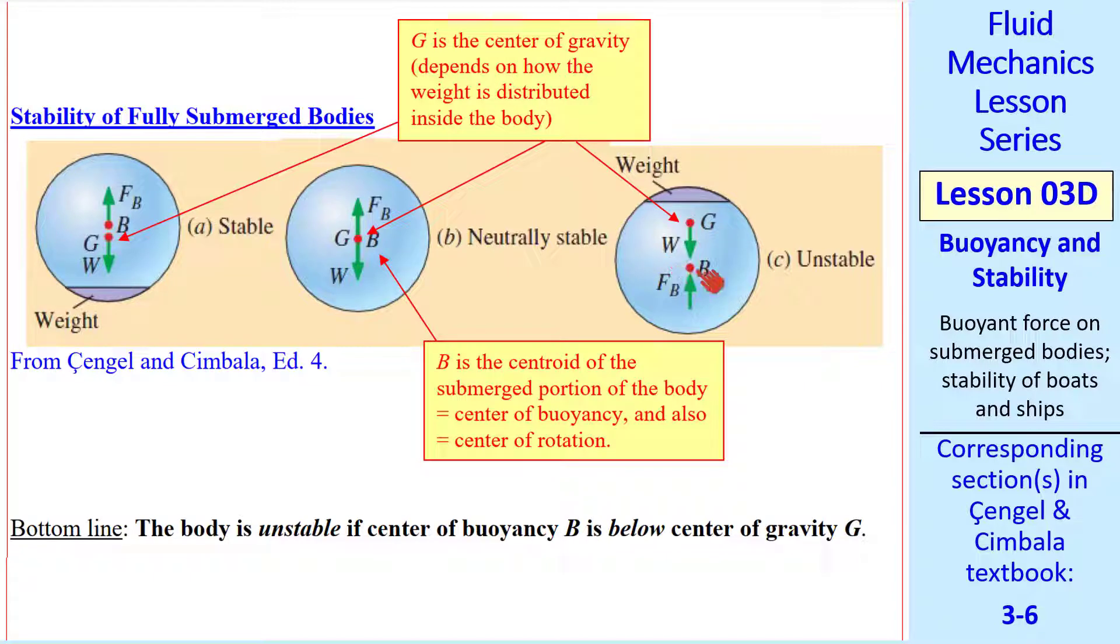And this case is unstable because G is above B. The bottom line is written here. The body is unstable if its center of buoyancy, B, is below the center of gravity, G, which is this case here. This is for the case of fully submerged bodies. What will happen is this body will flip over until it becomes stable like this one.